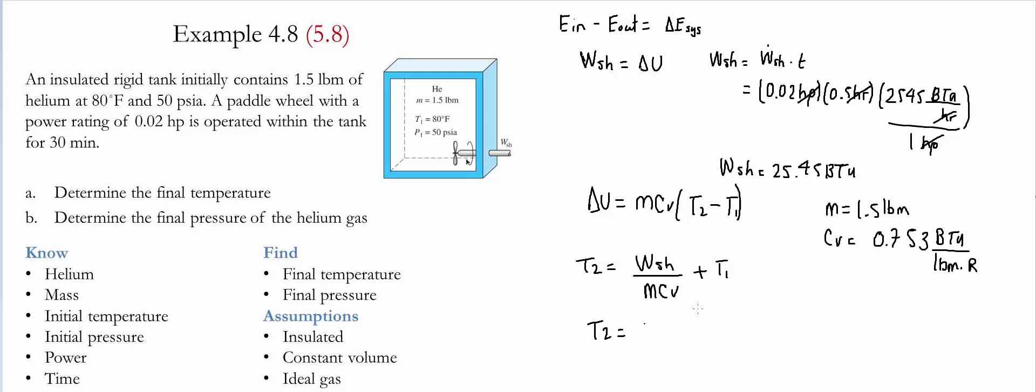We find that T2 equals 25.45 BTU divided by 1.5 pounds mass times 0.753 BTU pound mass rankine plus the temperature that we need in rankine. So the initial temperature was equal to 80 Fahrenheit. If we convert that into rankine, it gives us 540. Notice that the units cancel. This is pound mass, this is pound mass, BTU and BTU, and the left unit is rankine. Then we find that the final temperature is simply 562.5 rankine or 102.5 degree Fahrenheit.